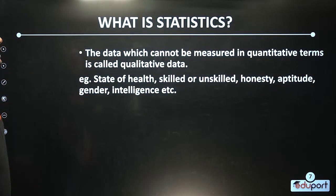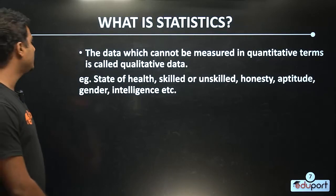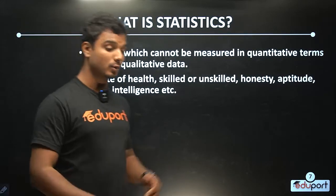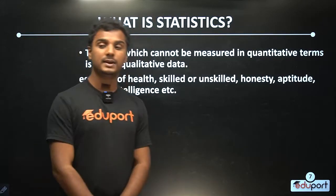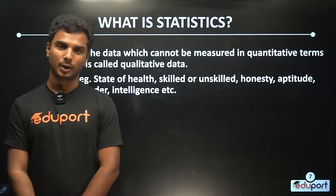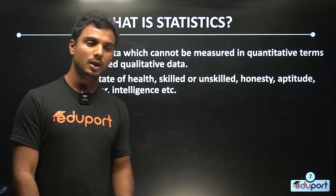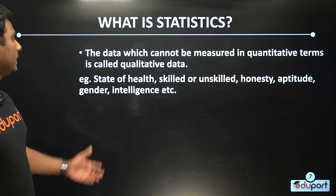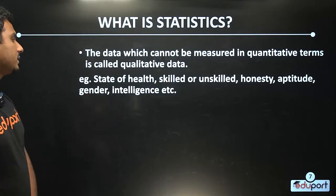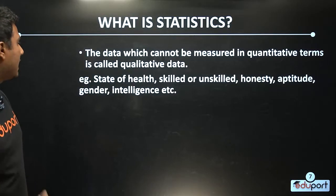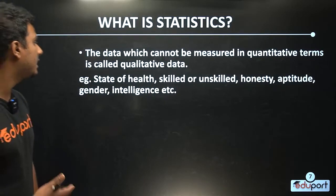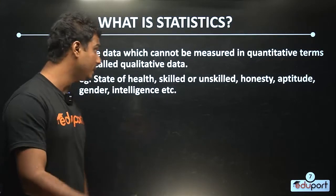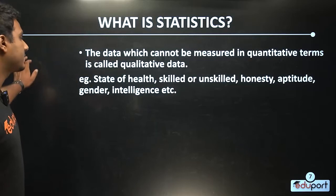The data which cannot be measured in quantitative terms is called qualitative data. Examples of qualitative data include state of health, skilled or unskilled, honesty, attitude, gender, and intelligence. These are important to learn for the exam.